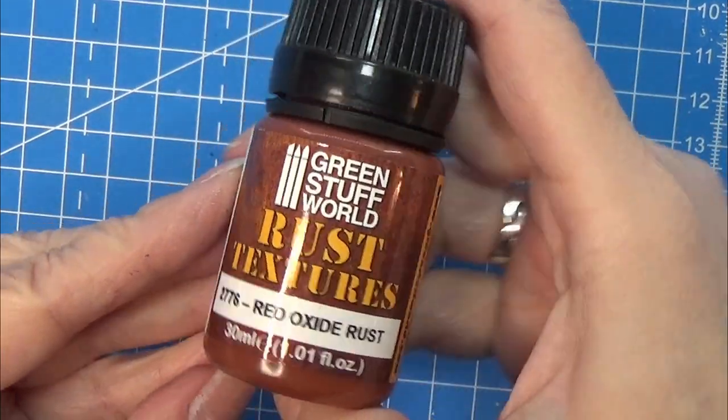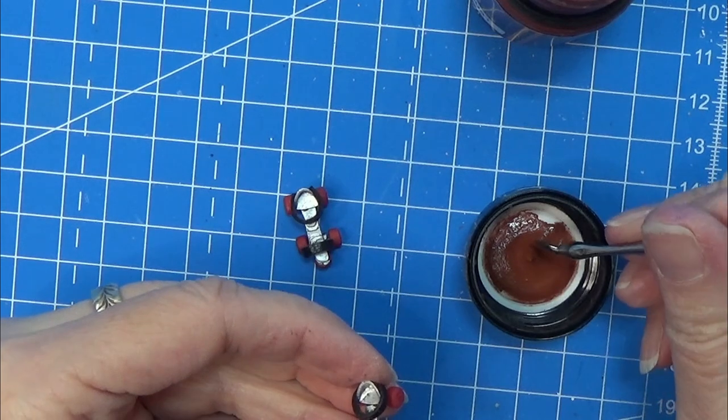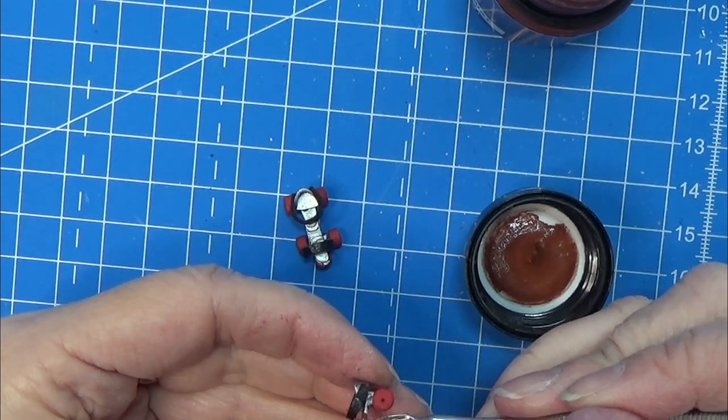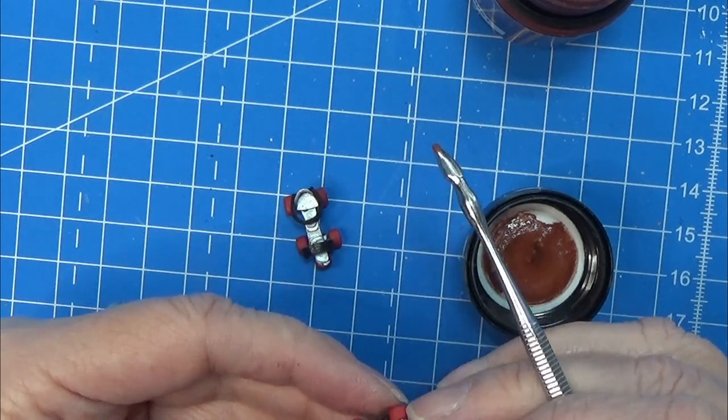If you want them to look a little rusty, you can use this rust texture from the green stuff, and I'm just using a metal spatula and just placing a little here and there.